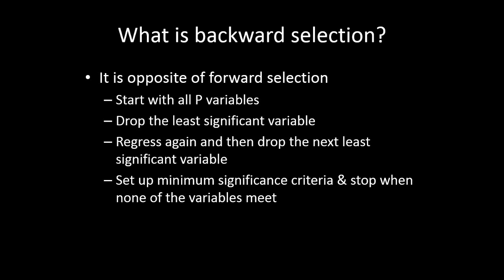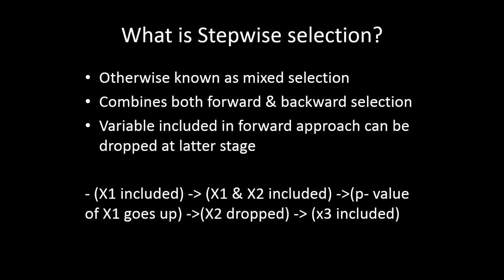We simply do the exact opposite — we keep on dropping variables instead of adding variables, unlike forward selection. The next question is: what is stepwise selection? Stepwise selection is also known as mixed selection; it combines both forward and backward selection. It uses the benefits of both and combines them, doing a better job most of the time. A variable which is included via forward selection can also be dropped at a later stage.